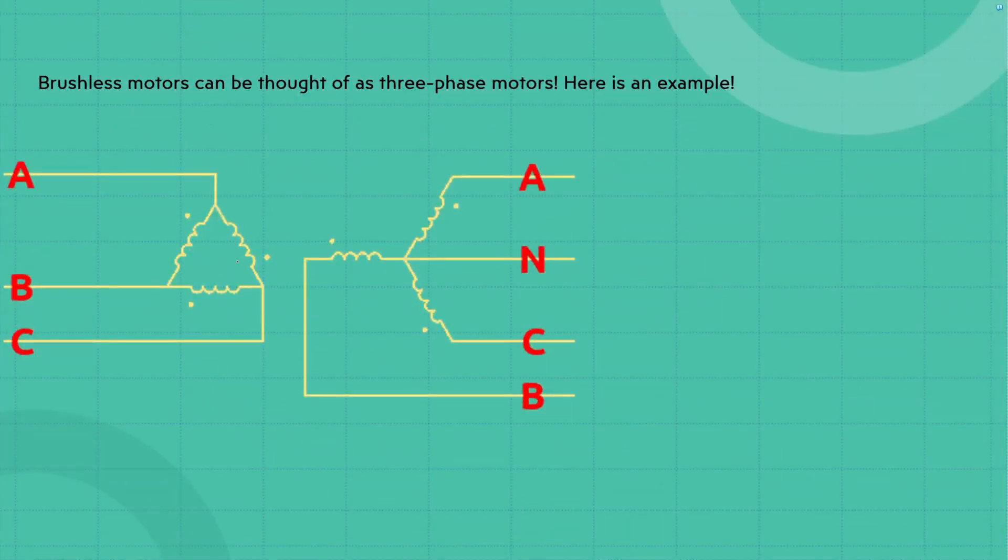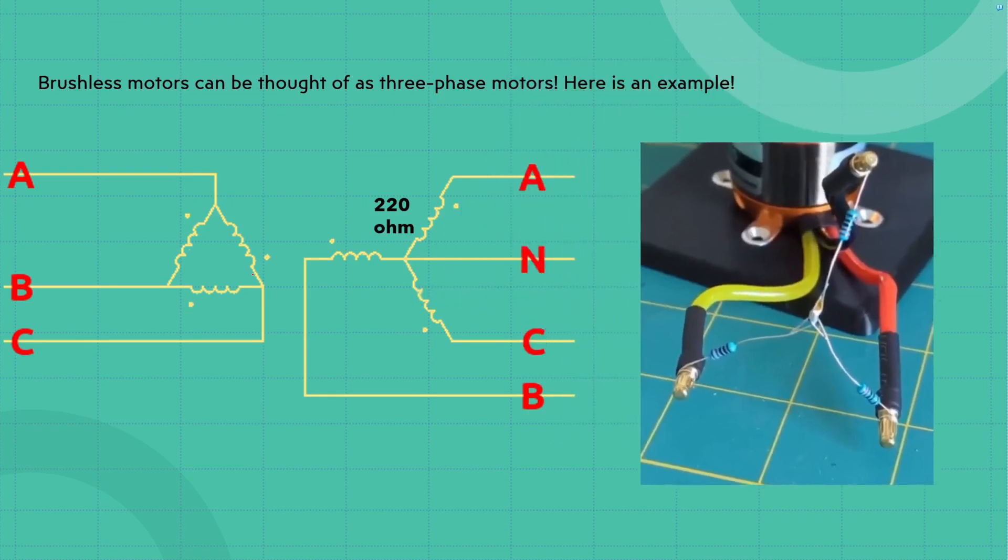Now, like I said before, a brushless motor can be thought of as a three-phase motor. And I have an example for you. So what you can actually do is you can take some resistors and hook them up to each of the three phases of your brushless motor.